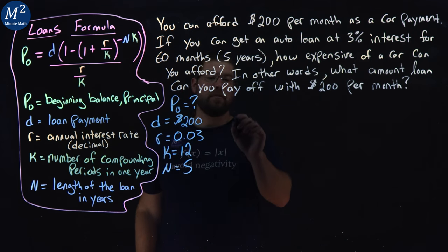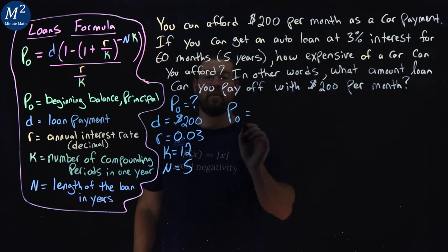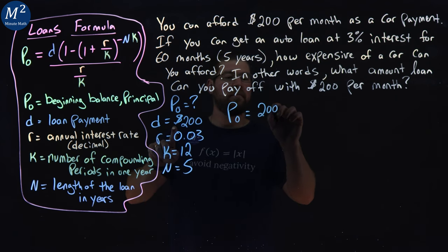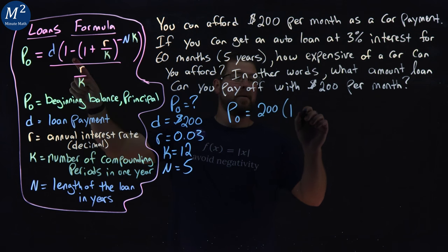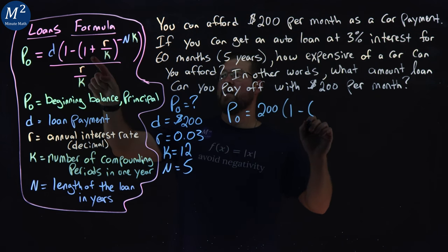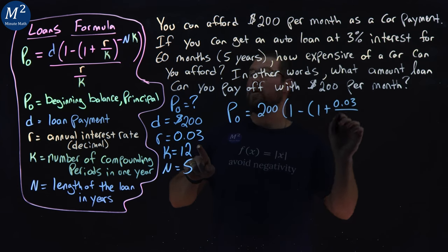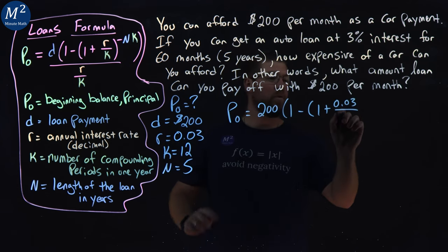With that, we're just going to plug it into our formula. P sub O is what we want to find. Our D value is 200 times one, minus parentheses again, one plus an R value 0.03 over our K value which is 12. Close that parentheses.